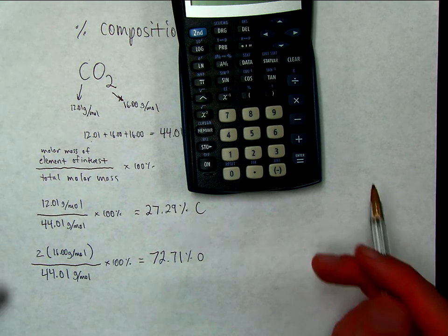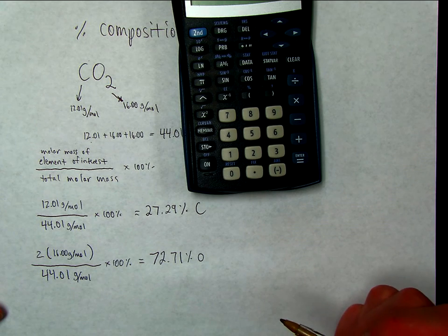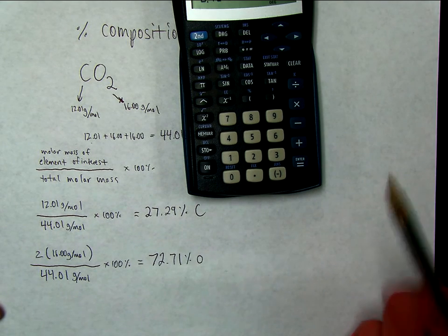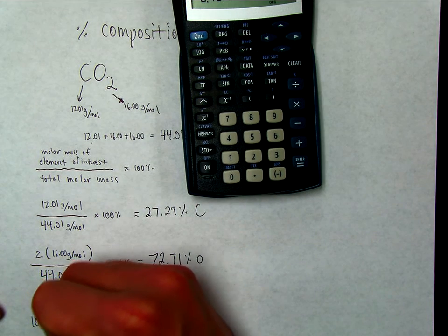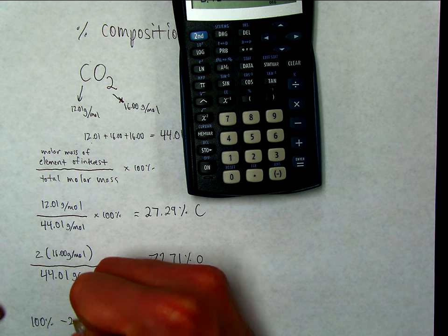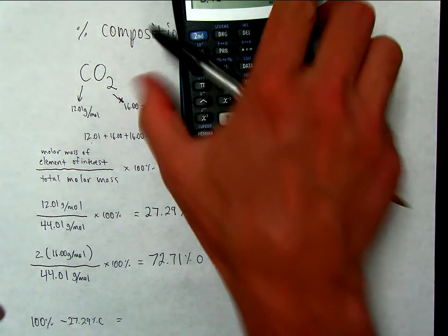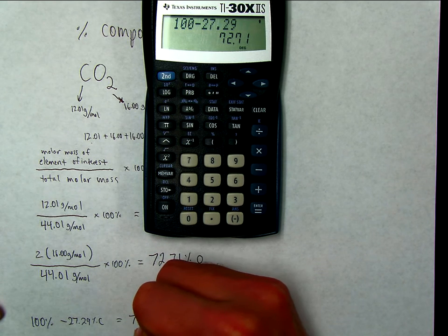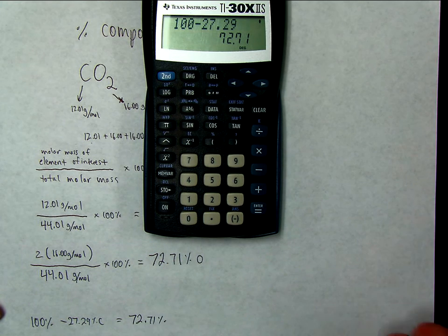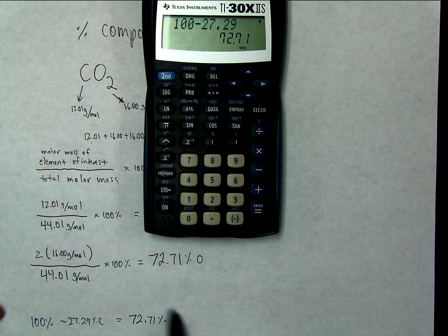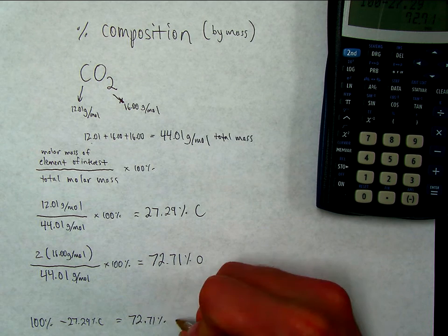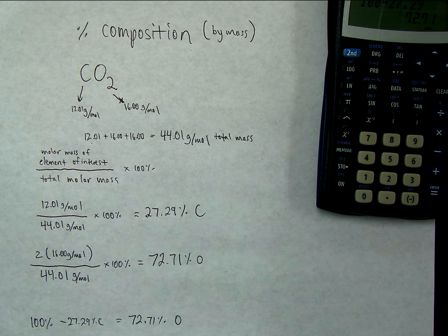I did mention a shortcut. Instead of running through the whole calculation, if there's only two elements, the percentages have to add up to 100. So if you know it's 27.29% carbon, then 100% minus 27.29% gives you 72.71% — everything else, which in this molecule is just oxygen. This shortcut will not work so well if you've got three or four elements in a more complicated molecule. However, for this sort of thing, it works just fine.